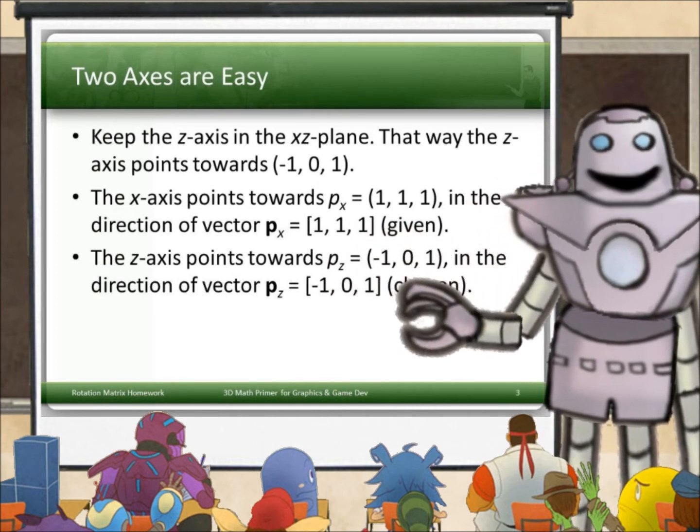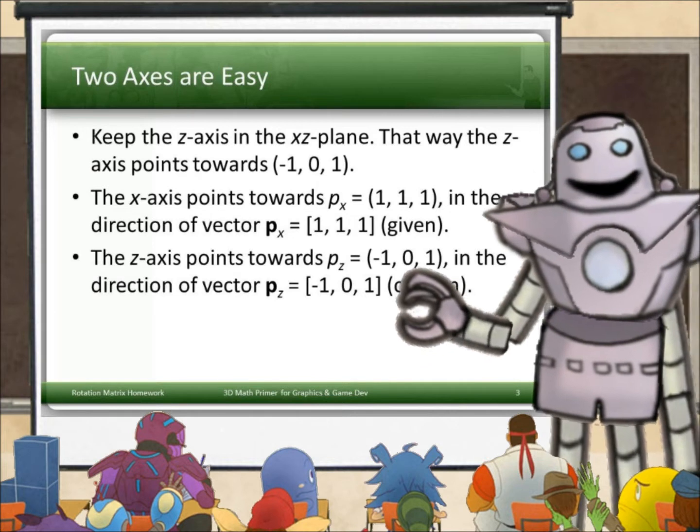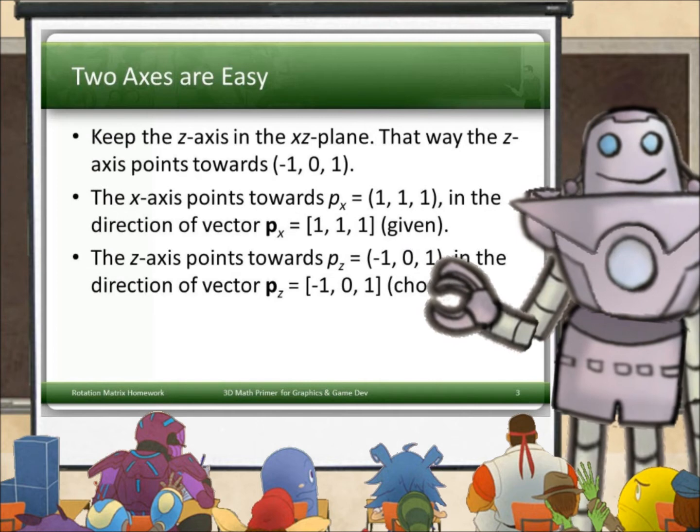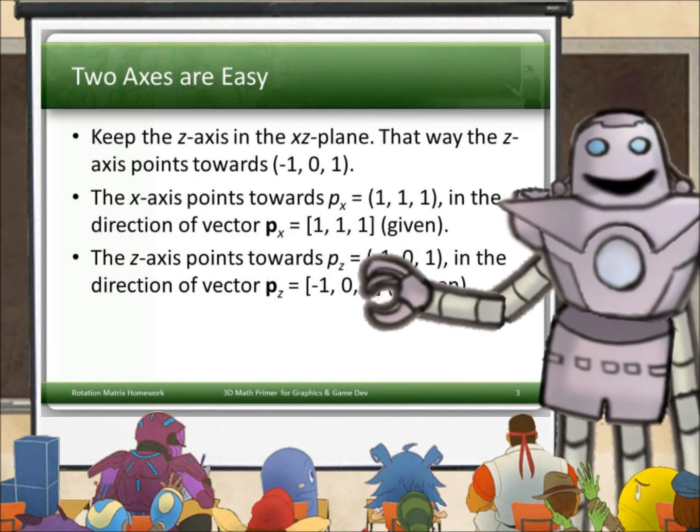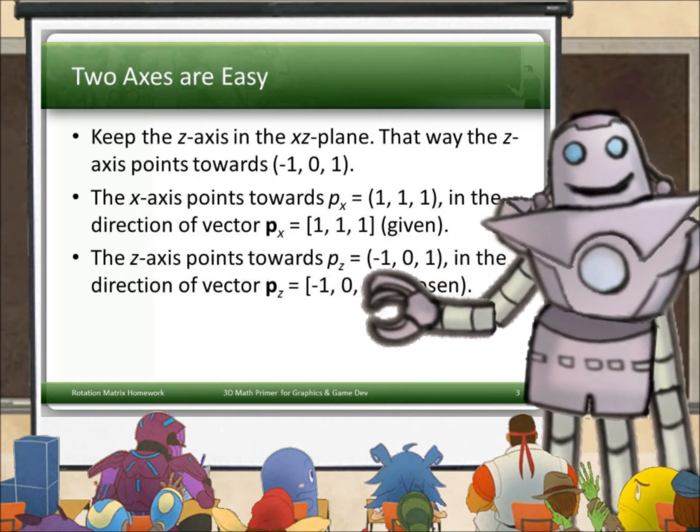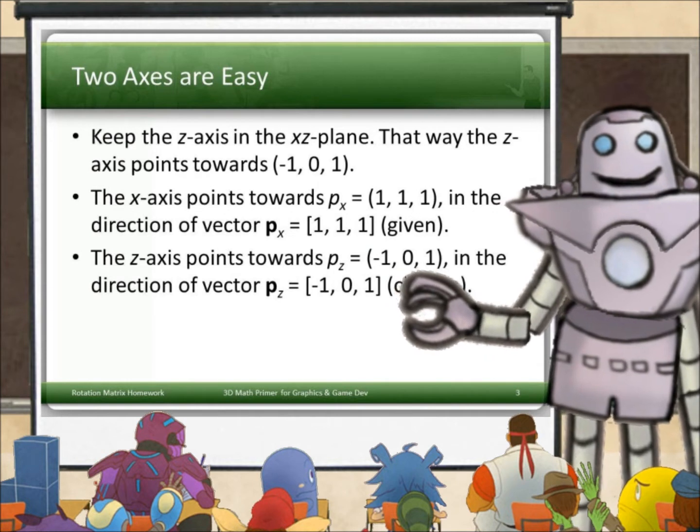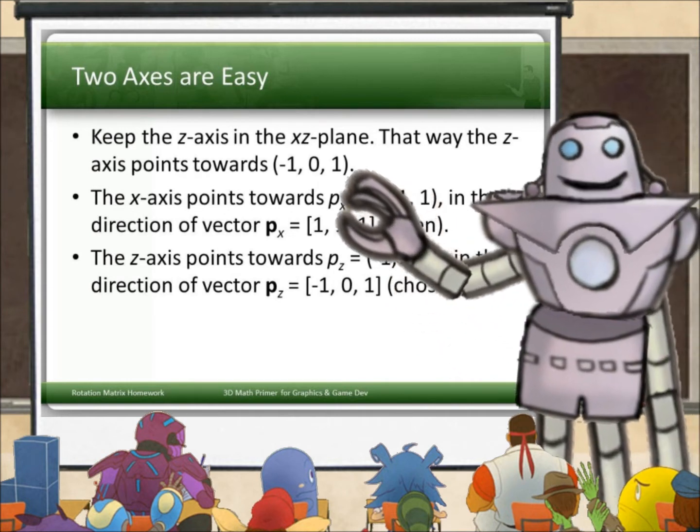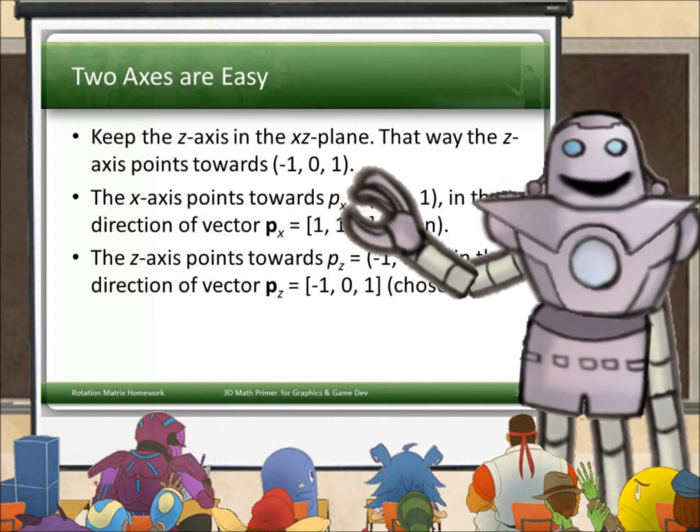I've just told you that I'm choosing the z-axis to point towards the point p_z equals (-1, 0, 1). I've chosen it now. But where did I get that (-1, 0, 1) thing from?